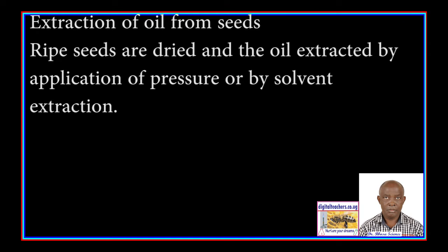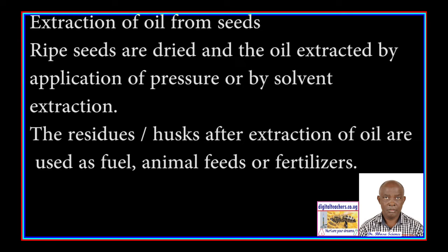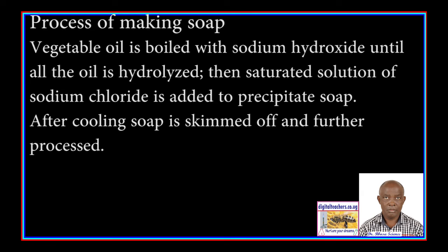Extraction of oil: Ripe seeds are dried and oil is extracted by application of pressure or by solvent extraction. The residues or husks after extraction of oil are used as animal feeds or fertilizer.